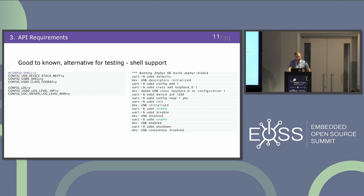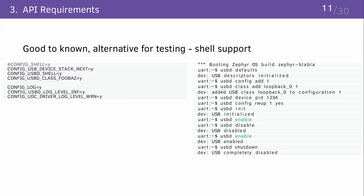It's a bit annoying to have this setup for testing or development, so there's an alternative: we have shell support for USB device. This is a sample that enables shell settings. For testing you can load some defaults — pre-configured device string descriptors. You can add a configuration, for example a class named loopback_0 added to configuration one, change the remote wakeup capability, initialize the device, and enable it. After the device is enumerated, the host will recognize it, and if the application no longer needs USB support, it can disable or shut down the device.